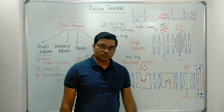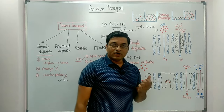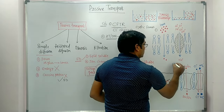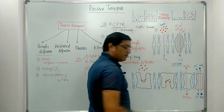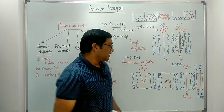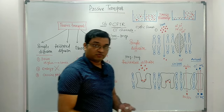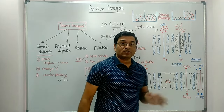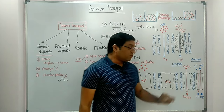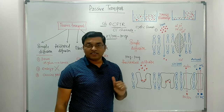Energy is not required for Facilitated Diffusion. When transport occurs across the membrane for one molecule only, it is known as Uniport. When two molecules are involved and transported in opposite directions, it is known as Antiport. There is also Symport. These (Uniport, Symport, Antiport) are also types of active transport, but here transport occurs down the concentration gradient without energy utilization, placing them under Facilitated Diffusion.